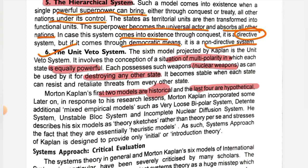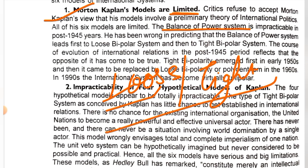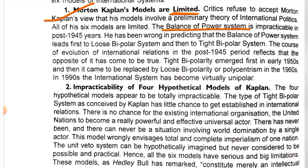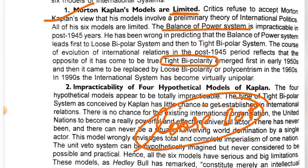Now the criticism of Kaplan: without criticism, no model is considered complete. First criticism — Kaplan's models are limited. There are many places and times where the model does not work. For example, he said loose bipolar comes first and then tight bipolar, but after World War II ended in 1945 and the Cold War started, tight bipolar came first, and then it slowly became loose bipolar. So his sequencing is inconsistent.